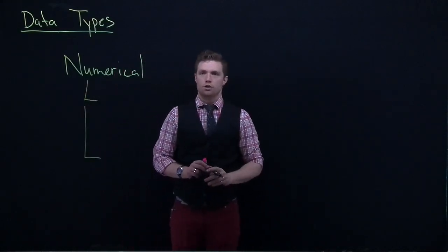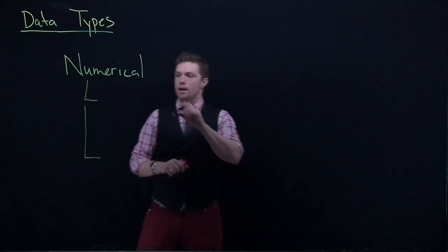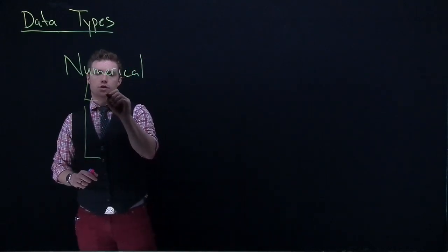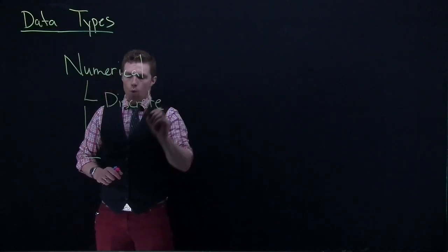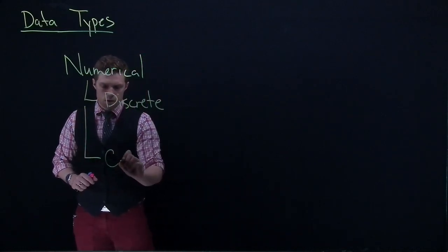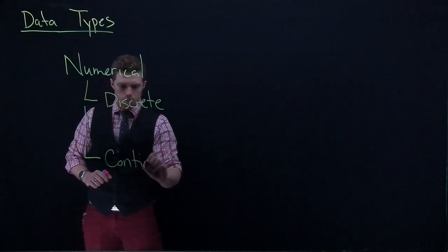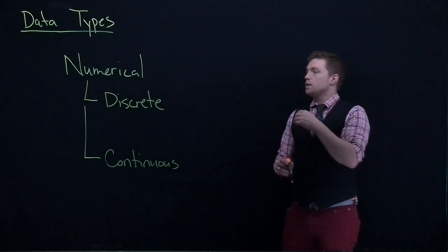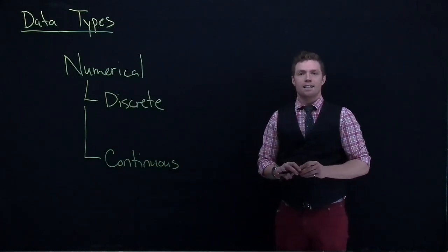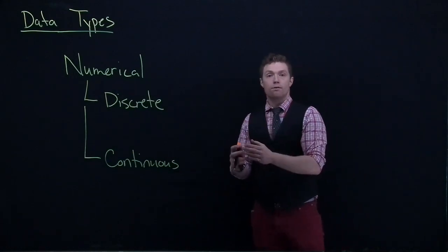If you have numerical data, it can be considered discrete or it can be considered continuous. Let's give a couple of examples. Continuous data is data that could be a number found anywhere along a number scale.